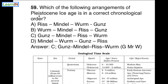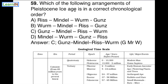Moving to the next question: Which of the following arrangements of Pleistocene ice ages is in the correct chronological order? There are four options. The correct answer is C — Gunz, Mindel, Riss, Wurm. This is the correct sequence of Pleistocene ice ages. To memorize this, here is a mnemonic: 'G Mr W' — G for Gunz first, M for Mindel, R for Riss, W for Wurm last.